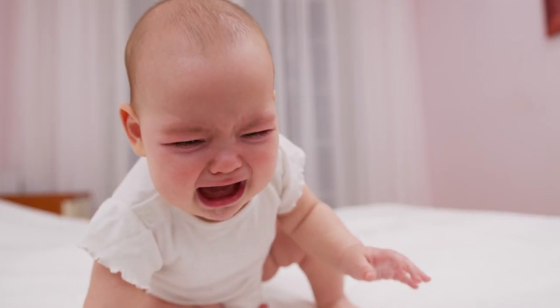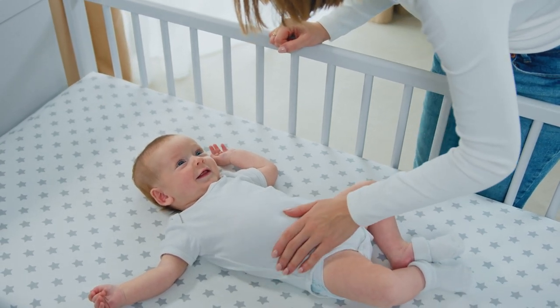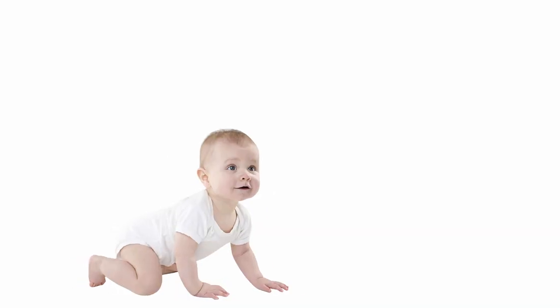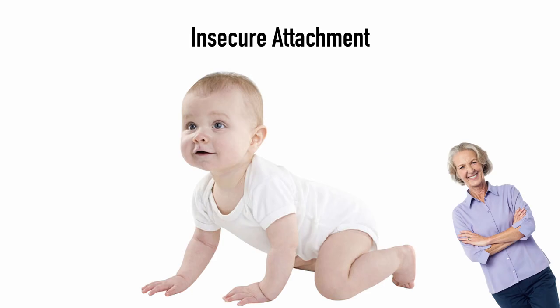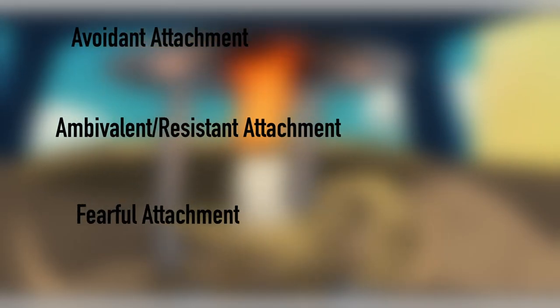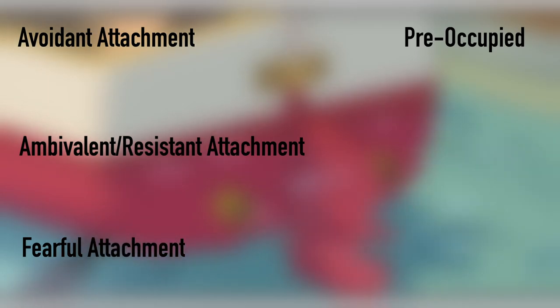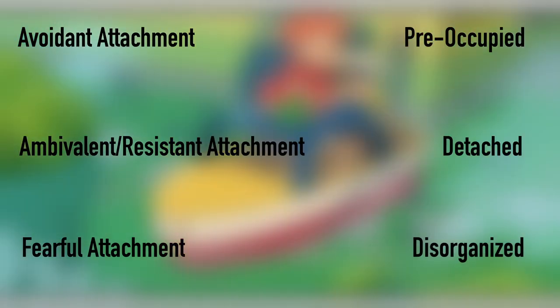The infant is distressed by their caregiver leaving; however, when the caregiver returns, they understand that all is well and they're safe. In contrast, if an infant does not cry when their mother leaves and pays little attention to the mother upon returning, this is indicative of an insecure attachment style. Ainsworth elaborated on insecure attachment to fragment it into two styles: avoidant and ambivalent/resistant. A third insecure style was later identified — fearful. These have been termed preoccupied for ambivalent/resistant, detached for avoidant, and disorganized for fearful.